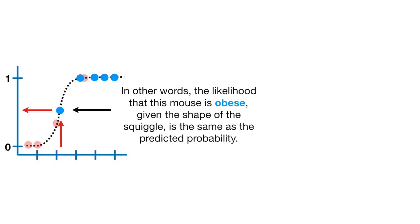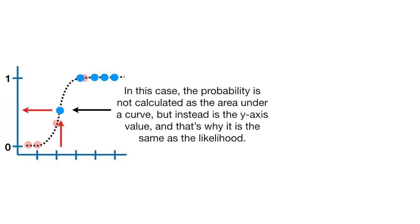In other words, the likelihood that this mouse is obese, given the shape of the squiggle, is the same as the predicted probability. In this case, the probability is not calculated as the area under a curve, but instead is the y-axis value. And that's why it's the same as the likelihood.